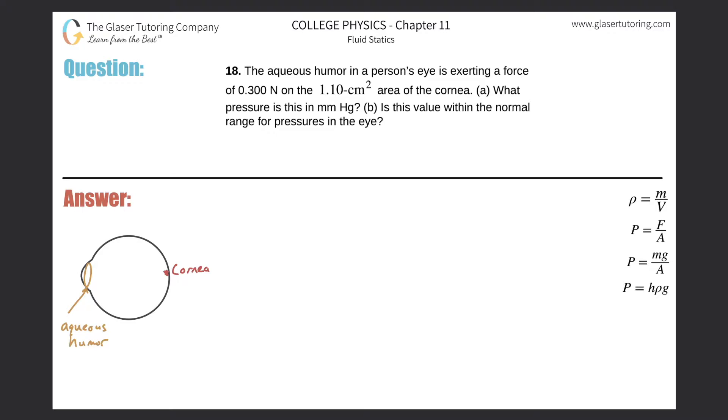Number 18: The aqueous humor in a person's eye is exerting a force of 0.3 newtons on the 1.1 centimeter square area of the cornea. Letter a: What pressure is this in millimeters of mercury?